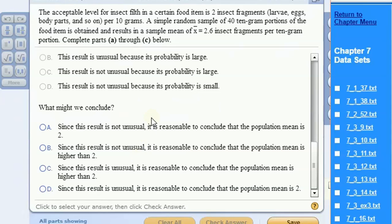So we would conclude that since the result is quite unusual, it's reasonable to conclude the population mean is actually higher than 2. It would be much more realistic if the population mean was say 2.5 or something like that. Then a sample average of 2.6 would not be such an unusual observation.